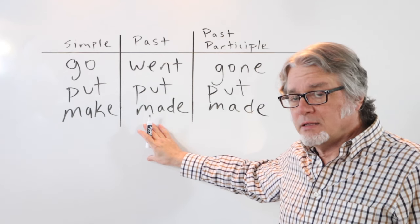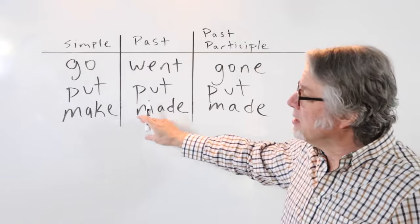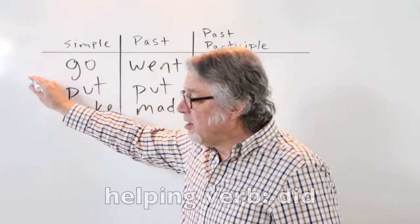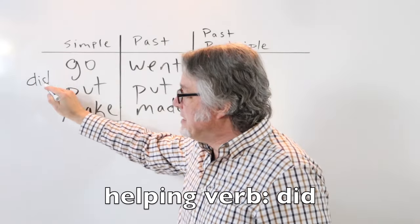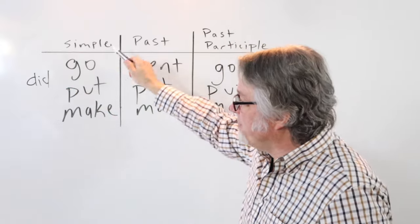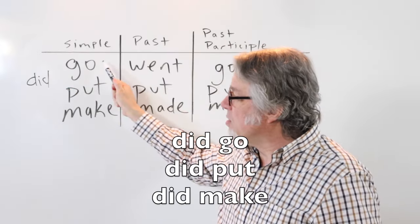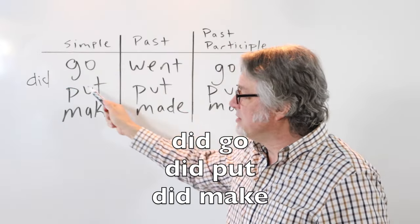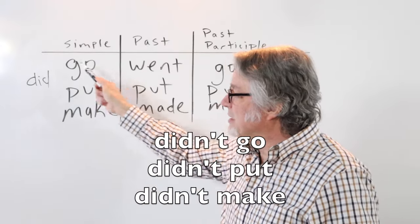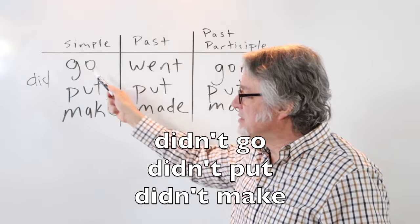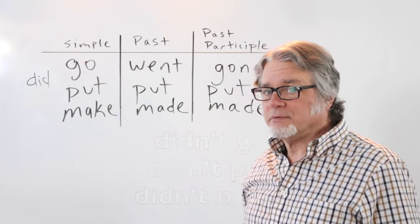To make a negative or to make a question, use a helping verb. Use 'did' before the simple form: did go, did put, did make. For negatives: didn't go, didn't put, did not make.